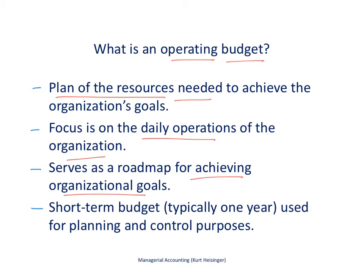For a manufacturing company, a typical set of operating budgets would include a sales budget — what we expect to sell in the upcoming period — and then the production costs we expect to incur for direct materials, direct labor, and manufacturing overhead. It would also include a selling and administrative budget, covering what kind of marketing costs, for example, we expect to see in the upcoming period.